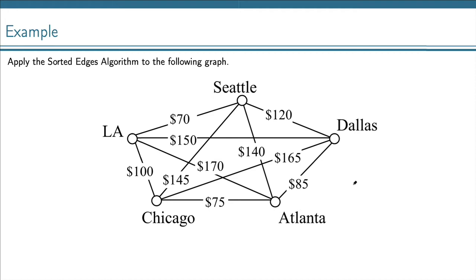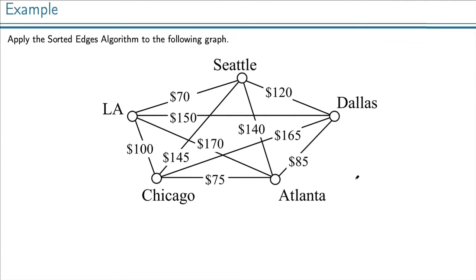Let's look at another example. We've got five cities and the airfare cost between them, and we'd like to find a Hamiltonian circuit. The cheapest flight is the $70 flight from LA to Seattle, so we add that. The next cheapest is the $75 from Chicago to Atlanta, then from Dallas to Atlanta, then from Chicago to Los Angeles. Now all vertices are connected with the path, so we just add the endpoints of the path. There is our Hamiltonian circuit going around the outside of the graph.